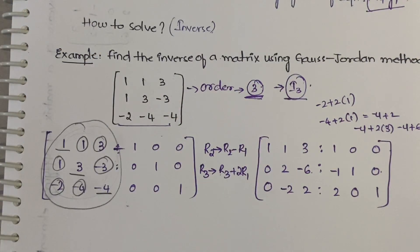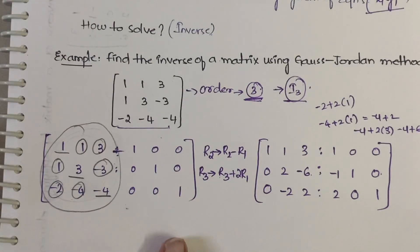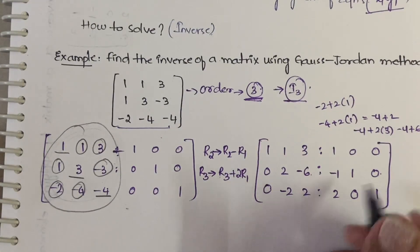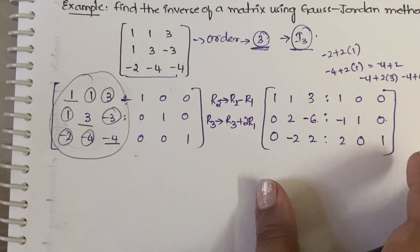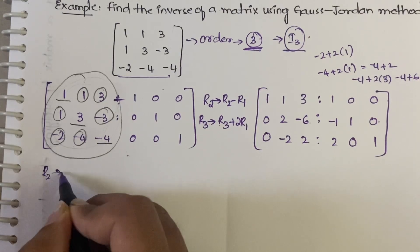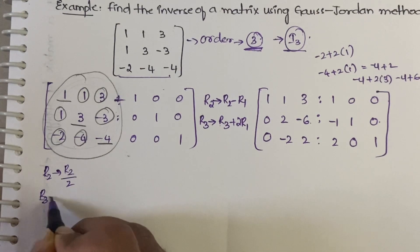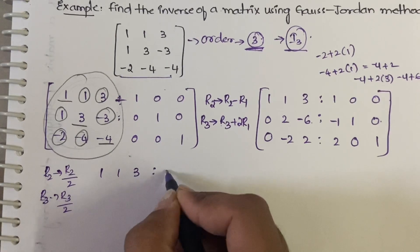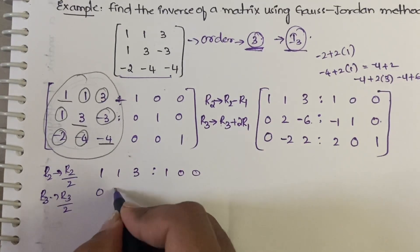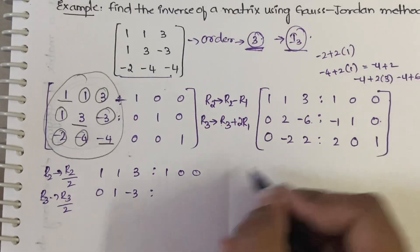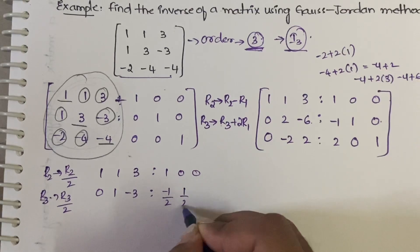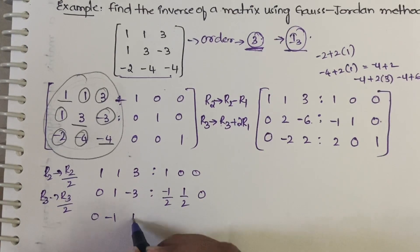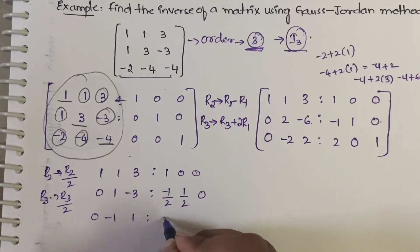Next, apply R2 → R2/2 and R3 → R3/2 to simplify. After this, R1 remains (1, 1, 3 | 1, 0, 0), R2 becomes (0, 1, -3 | -1/2, 1/2, 0), and R3 becomes (0, -1, 1 | 1, 0, 1/2).